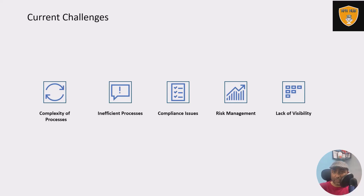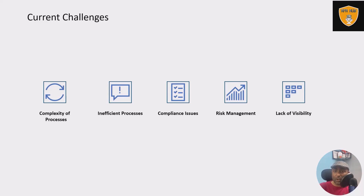Inefficient processes — some processes don't even have proper inputs or decision measures. Compliance issues, risk management, and lack of visibility mean users are unable to figure out how they can achieve their goals.